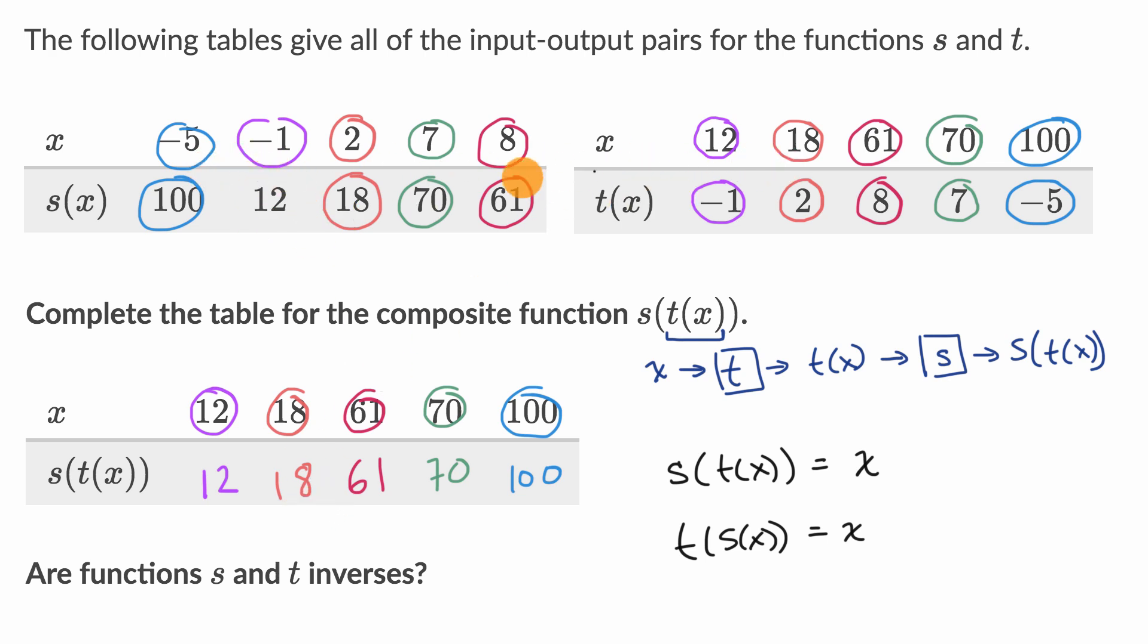Now, when you look at these two tables up here, the following table gives all of the input output pairs for the function s and t. So this right over here is the domain for the function s, and this right over here is the domain for the function t. So because for every member of the domain of the function s, the corresponding output right over there is the domain for the function t, and it takes us back to where we began. And then the opposite is true as well. For every member of the domain of t, what it outputs is all of the possible inputs for x, and they all take us back to where we began. So yes, the functions are inverses.